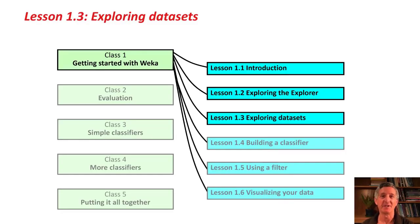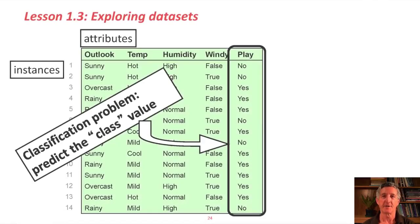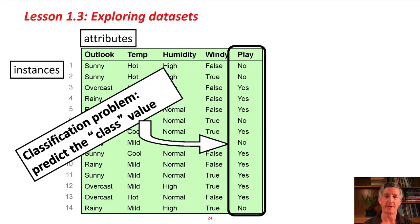Welcome back for another five minutes in New Zealand with Data Mining with Weka. This is Lesson 1.3, and we're going to look at exploring datasets. We looked at this data file in the last lesson — it's the weather data, a toy dataset of course. It has about 14 days, or instances, and each instance is described by five attributes: four to do with the weather, and the last attribute, which we call the class value — the thing we're trying to predict — whether or not to play this unspecified game. This is called a classification problem.